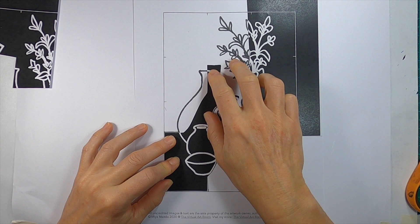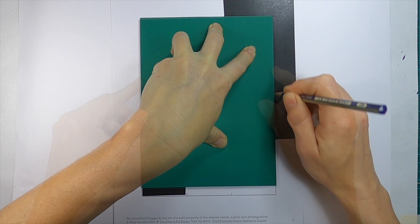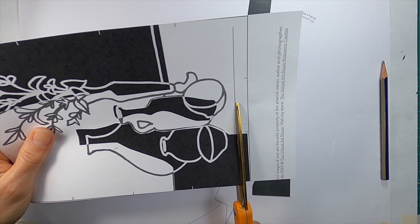Now I need to transfer the image to the lino. There's a few ways you can do this. You can use transfer paper or rub a soft pencil onto the back of your drawing and trace it through.